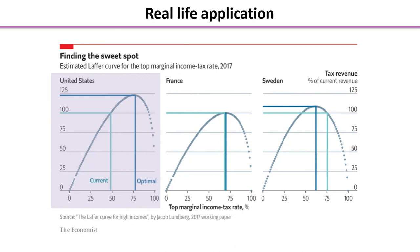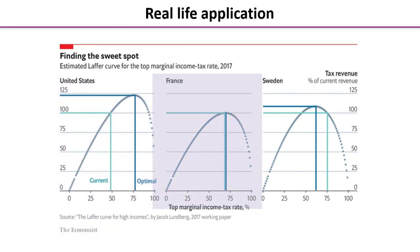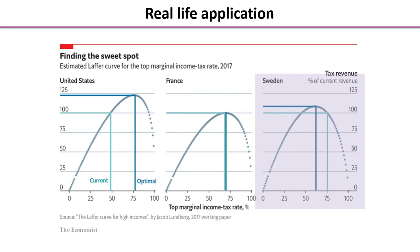The y-axis shows tax revenue as a percentage of current revenue. For the United States, the current marginal tax rate is around 48–49 percent, but if they raised it to around 76 percent they would earn more tax revenue — so currently the US tax system on high earners is underperforming. Comparing that to France, the research suggests they've actually got it pretty much right: the top marginal income tax rate on high earners in France couldn't be changed to generate more revenue. By contrast, Sweden has gone a bit too far — their marginal income tax rate on high earners is just over 75 percent, but the chart shows that lowering it to around 60 percent would actually increase their tax revenue.